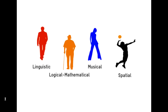First, we have linguistic intelligence — this involves reading, writing, speaking, and the use of languages. Then we have logical-mathematical intelligence; a scientist would be a good example. This can involve computing skills, understanding patterns and relationships, and the ability to solve problems using logic. Then we have musical intelligence — composers have musical intelligence — and it means understanding and expressing yourself through music, rhythm, and dance.